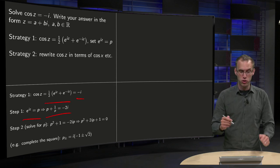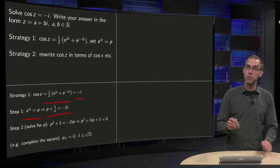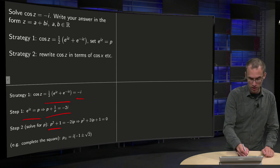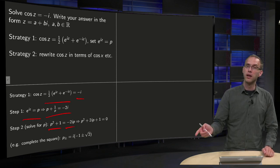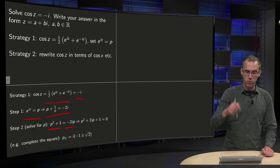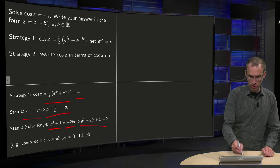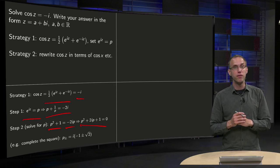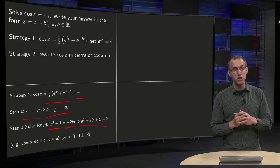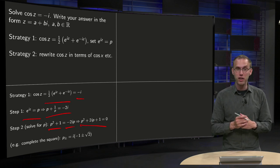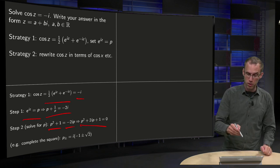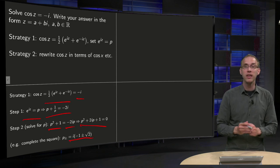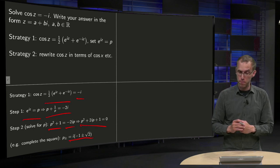Then you can solve for p in the next step: multiplying through by p gives p² + 1 equals minus 2i times p. Bring the minus 2i·p to the other side, and then use your favorite method to solve this quadratic equation — like completing the square or the ABC formula — and you get those two solutions for p.